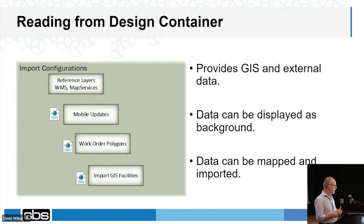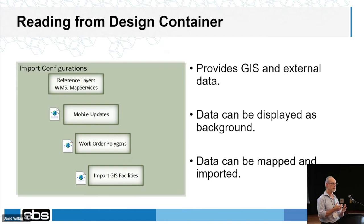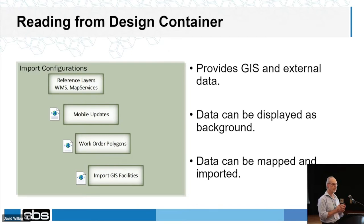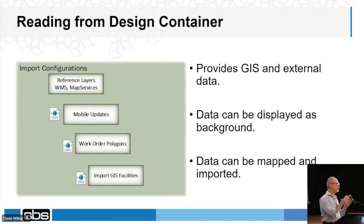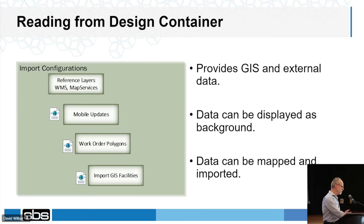Reading data from the design container, we read reference maps — all background maps published by Hydro One, including streets, backgrounds, lots, and special areas for fauna they need to account for in construction and designs. We import all mobile updates, so they can send notes to mobile, bring them back, and import them into AUD. We also bring in work order polygons of active work in the area, so you know if anyone adjacent might affect your work, plus the GIS facilities.